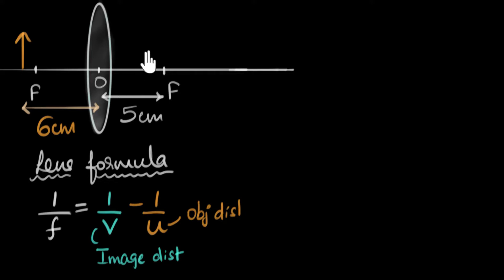So, we're going to call this as positive. Which means all the positions, and all the distances you measure on this side of the lens, we'll call that as a positive distance. And if you measure any distance on the left side of the lens, we're going to call that as negative distance.